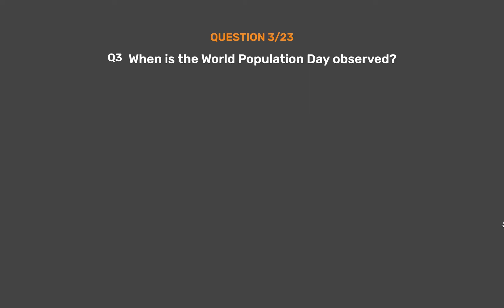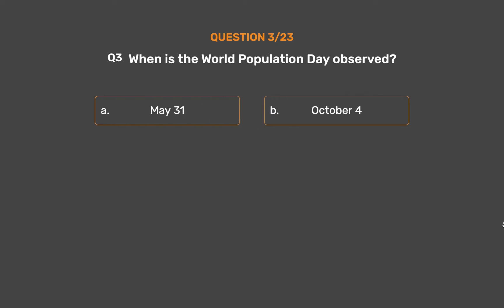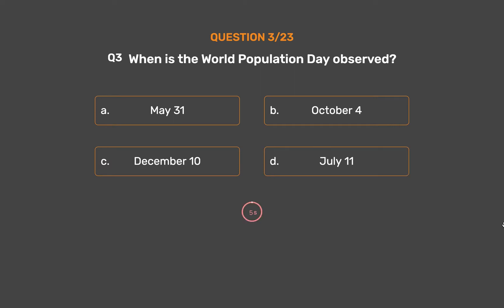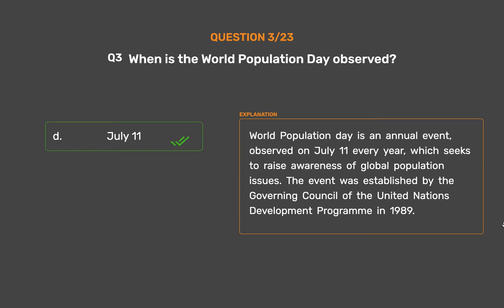Question No. 3. When is the World Population Day observed? Option A, May 31st; Option B, October 4th; Option C, December 10th; Option D, July 11th. World Population Day is an annual event observed on July 11th every year, which seeks to raise awareness of global population issues. The event was established by the Governing Council of the United Nations Development Programme in 1989.